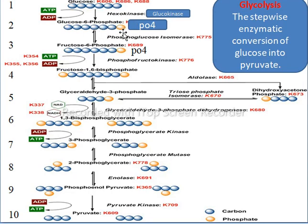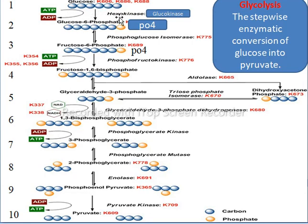So where does this phosphate come from and bind to the glucose molecule? Here we have an ATP which is converted into ADP, or adenosine diphosphate, meaning we lose one phosphate. It will bind to carbon number 6 of glucose. Here in the diagram I have marked this in orange — this phenomenon is called phosphorylation, which is due to adenosine triphosphate or ATP. This phosphorylation is facilitated by the hexokinase or glucokinase enzyme.